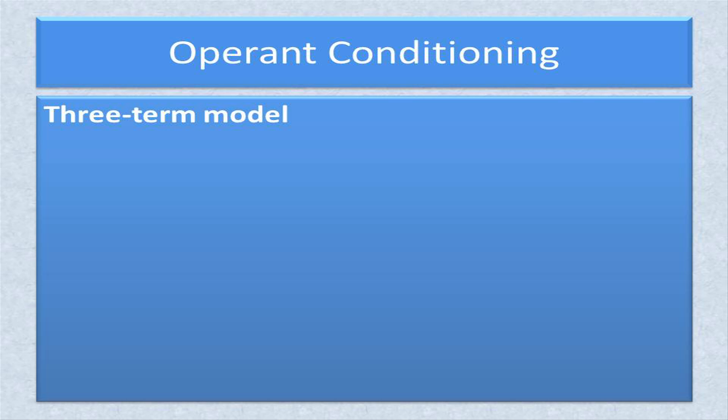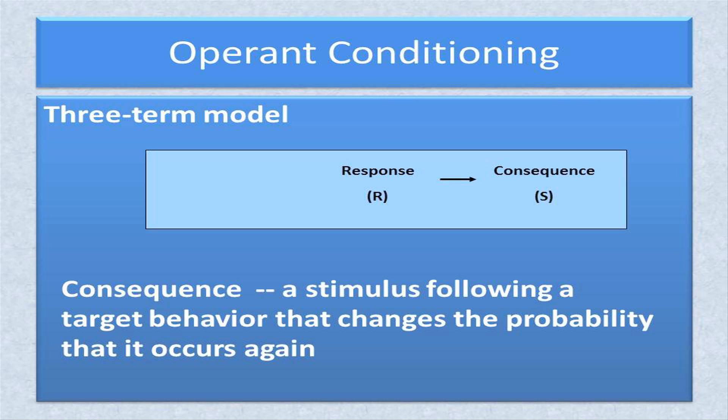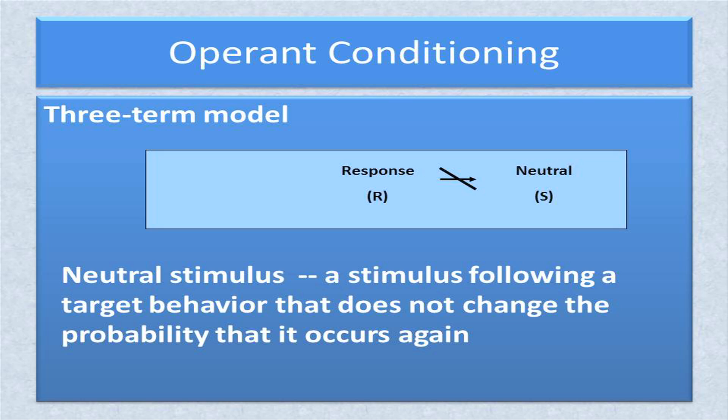Operant Conditioning reflects a three-term model. It starts with a voluntary behavior emitted by the organism, followed by a stimulus labeled a consequence that changes the probability that the target behavior occurs again. The frequency of the target behavior must either increase or decrease as a result of being followed by a stimulus; otherwise, a stimulus is not labeled as a consequence. A stimulus that follows a response but does not change the probability that the response will occur again is labeled a neutral stimulus. It is important to understand that the label applied to stimuli is not known until after the change in behavior has occurred.